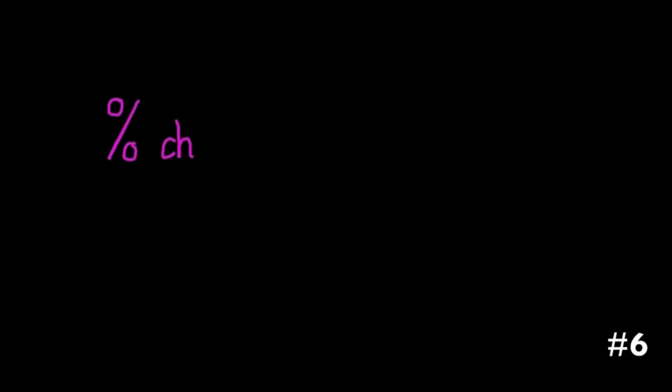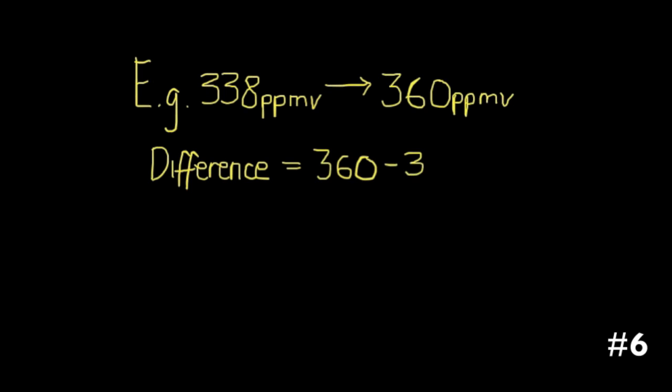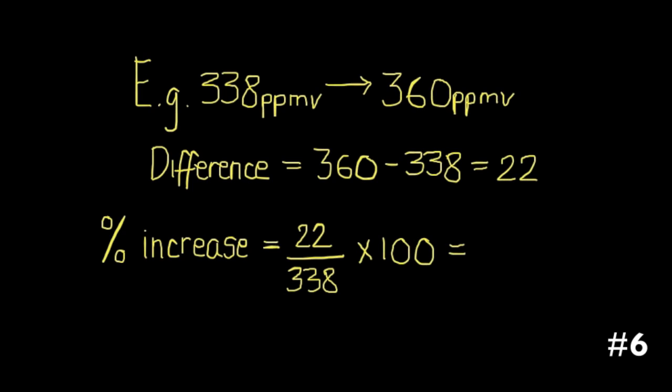You may be asked to calculate percentage change, so make sure you know the formula for that. It is the difference between the two values divided by the original value and multiplied by 100. As an example, let's say we have been asked to calculate the percentage increase in carbon dioxide concentrations, and we note that it goes from 338 to 360 parts per million by volume. First, you would find the difference, 360 minus 338 gives you 22, and you are going to do the difference, 22 divided by the original or starting value, which is 338, multiplied by 100, it gives you a percentage increase of 6.5%.